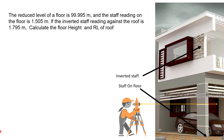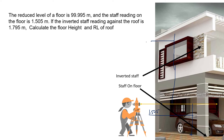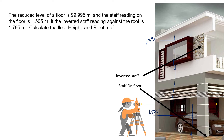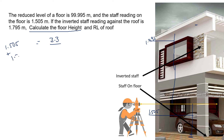Now writing this down: the height from the floor to the staff base is 1.505, and from the roof the inverted staff reading is 1.795. So, from the floor to the roof, the total height will be the sum of these two readings: 1.505 plus 1.795 equals 3.3 meters.